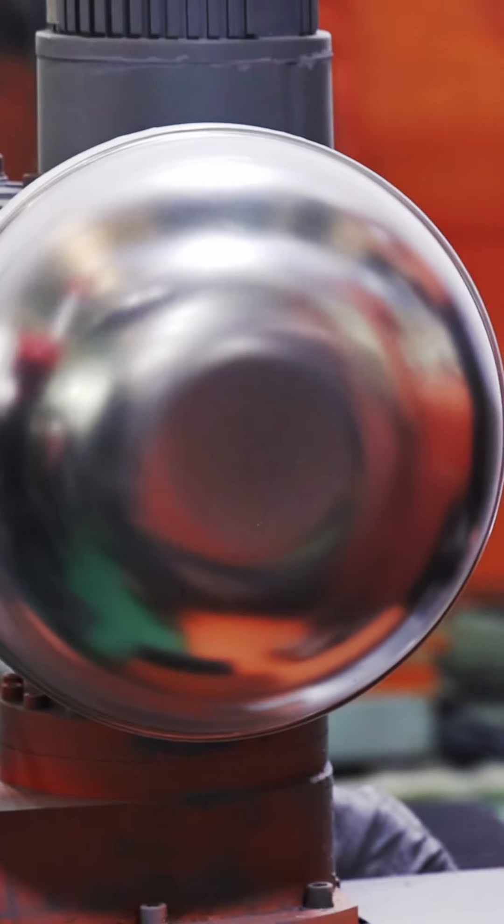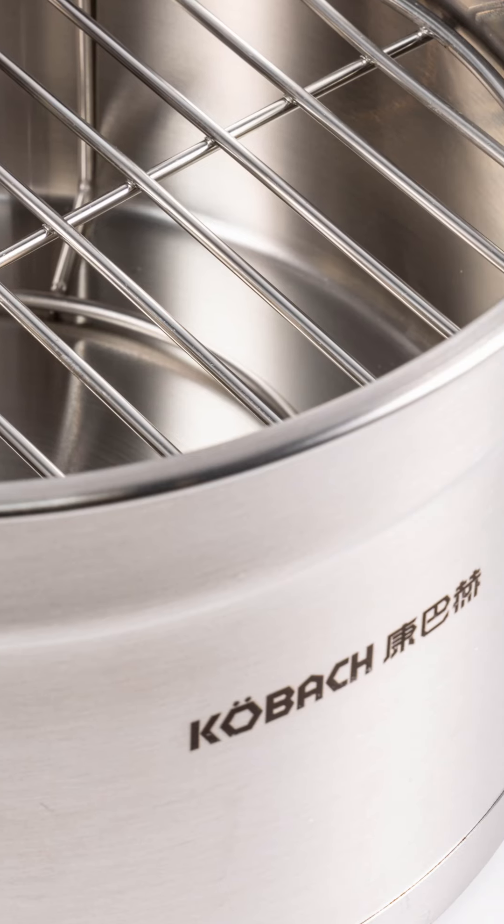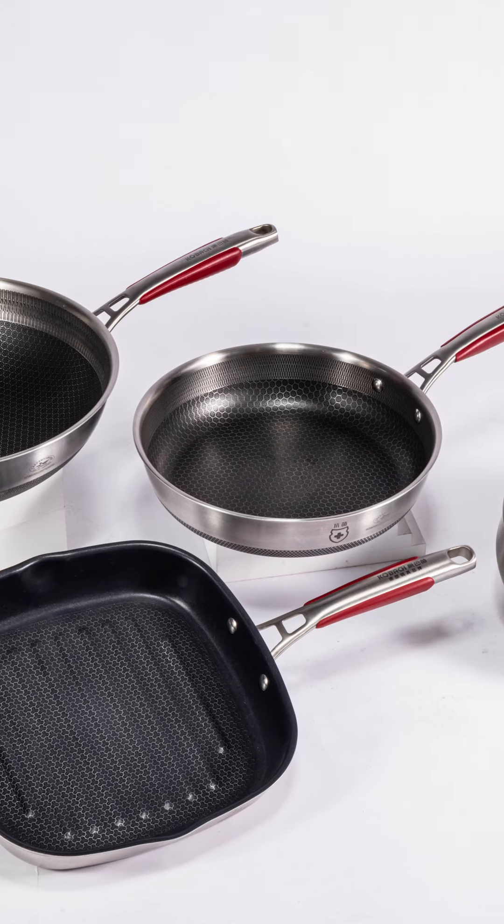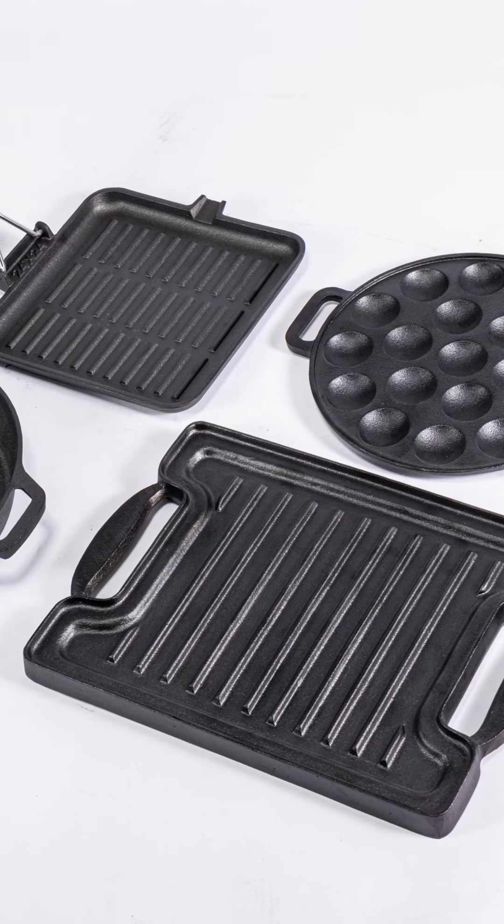Because of its thickness, most cast iron pans are significantly heavier than stainless steel. But in general, cast iron cookware is approximately twice as heavy as stainless steel.